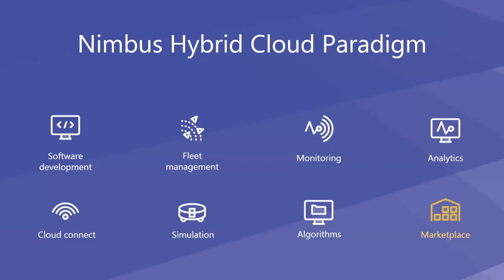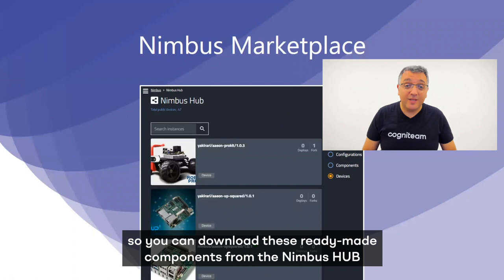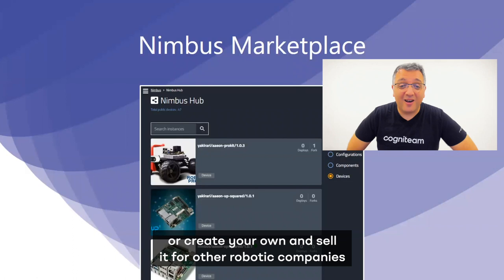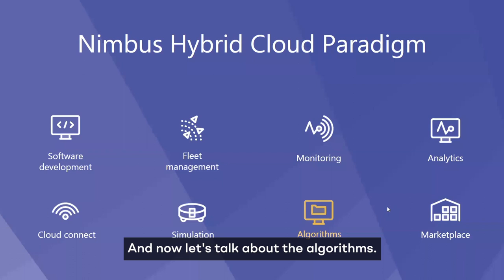Let's start by talking about the marketplace. We want you to focus on your unique IP, so you need ready-made components. You can download these ready-made components from the Nimbus Hub, or create your own and sell them to other robotic companies. You can download different configurations, different algorithms, different components, and of course install different devices.